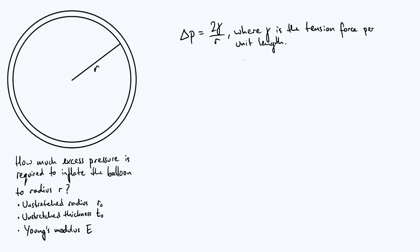Now the first key equation we're going to need in this video is Δp = 2γ/R, where γ is the tension per unit length acting in the rubber skin of the balloon, R is of course the radius of the balloon, and Δp is the excess pressure, which is exactly what we're looking for.